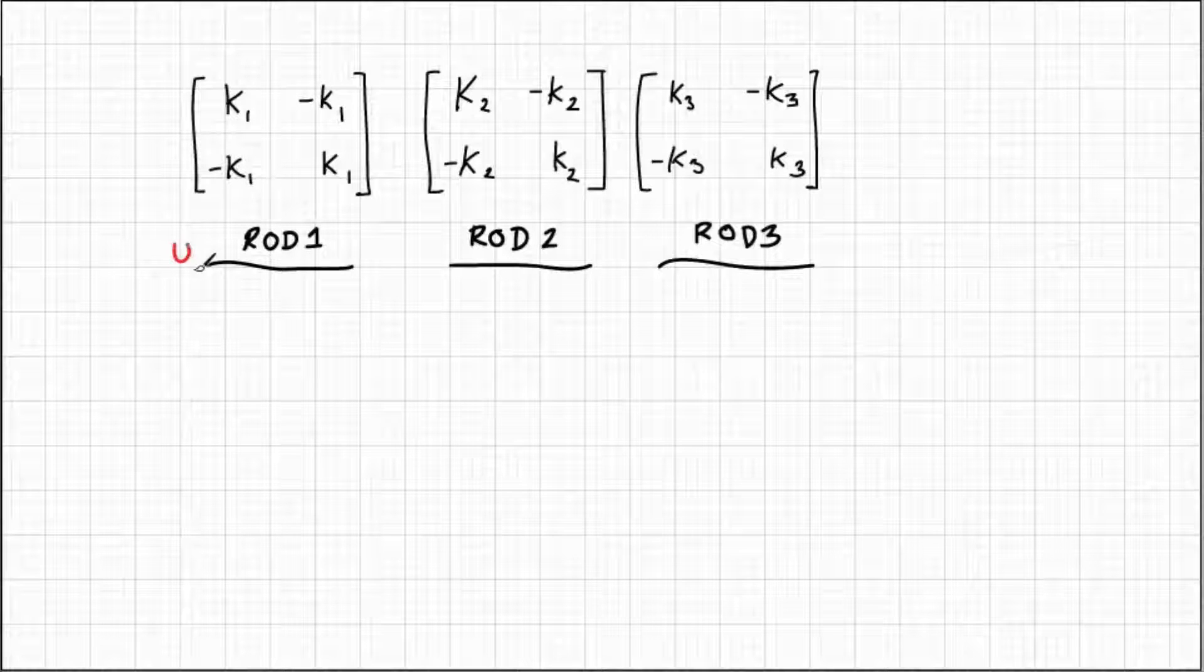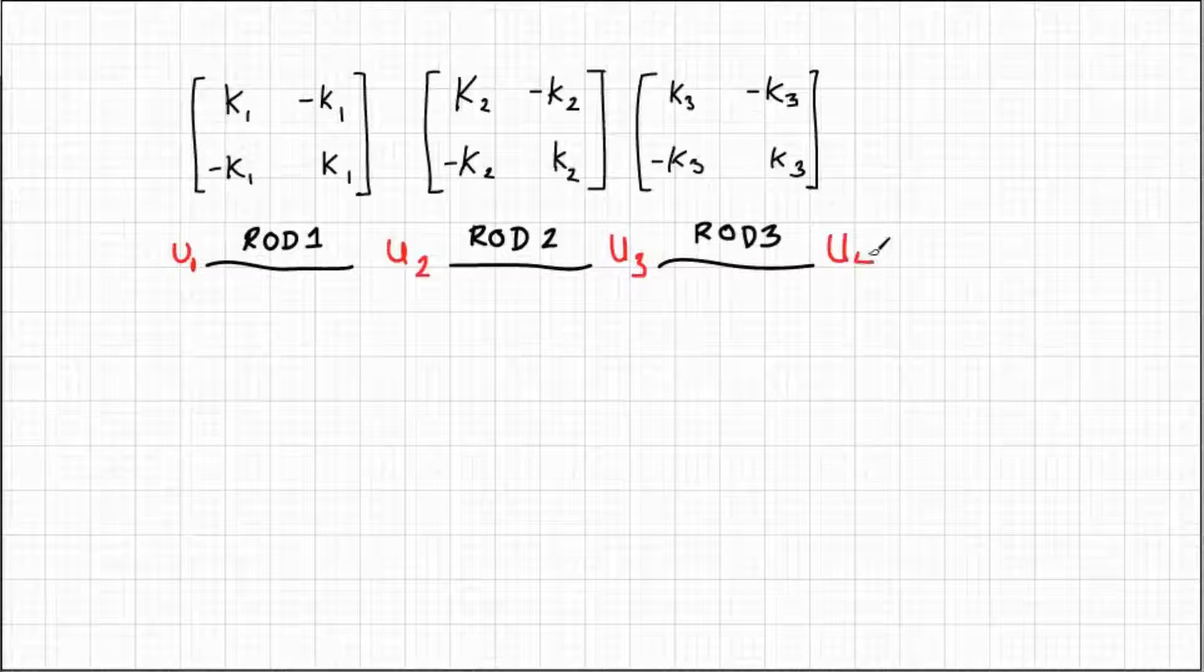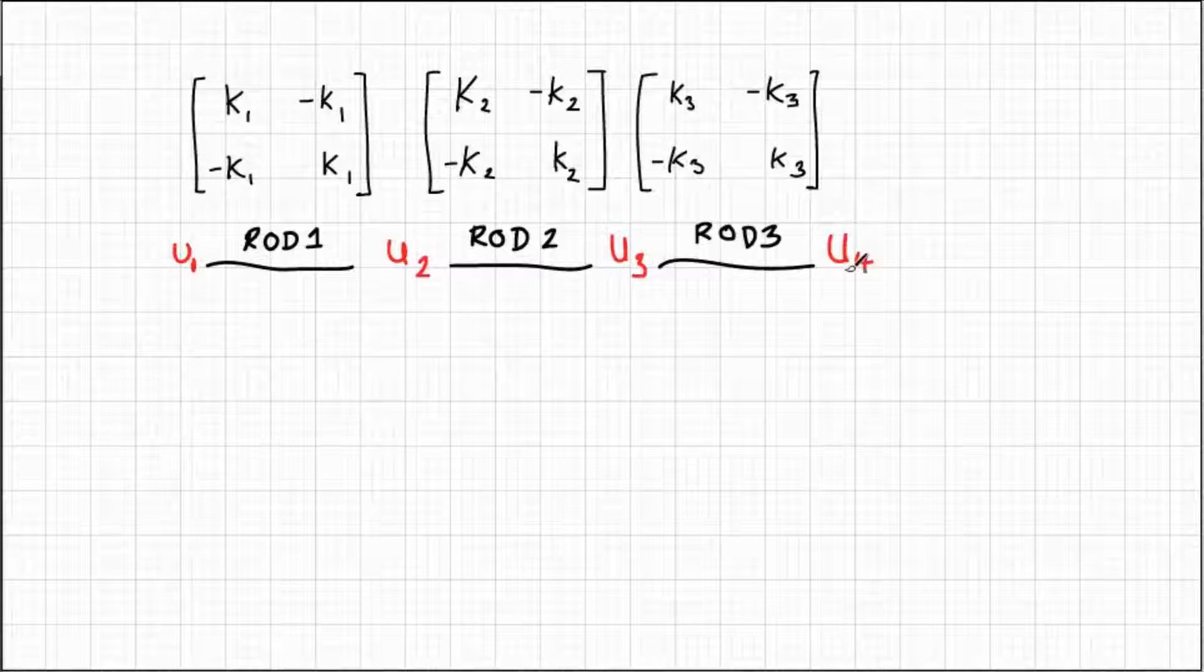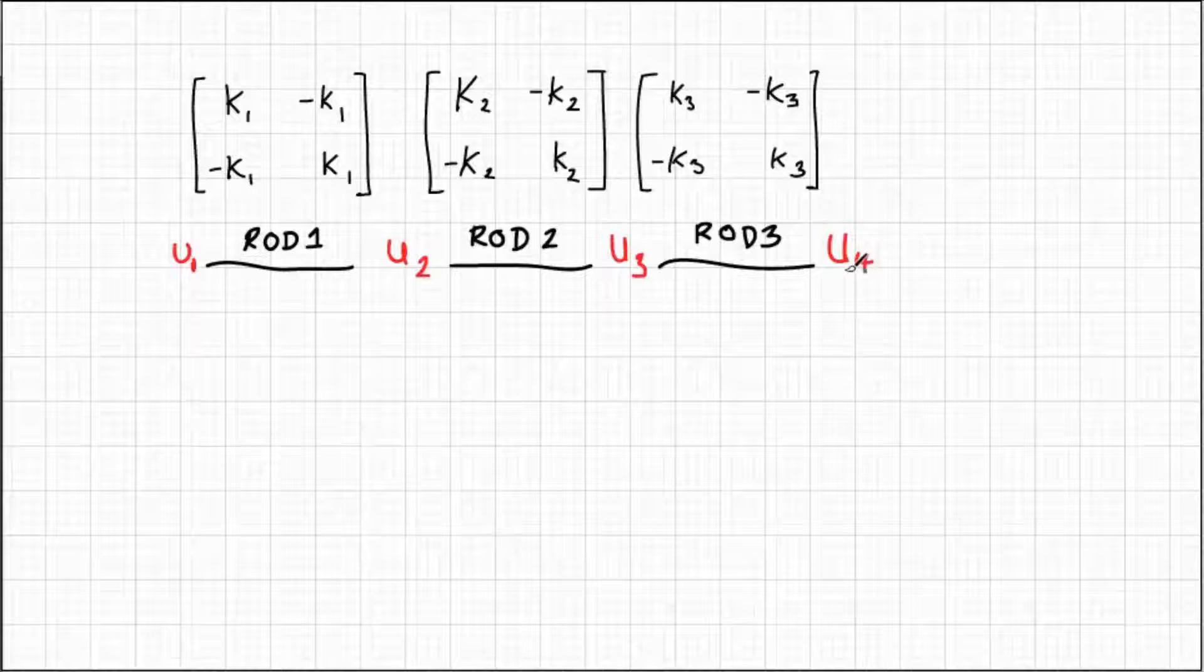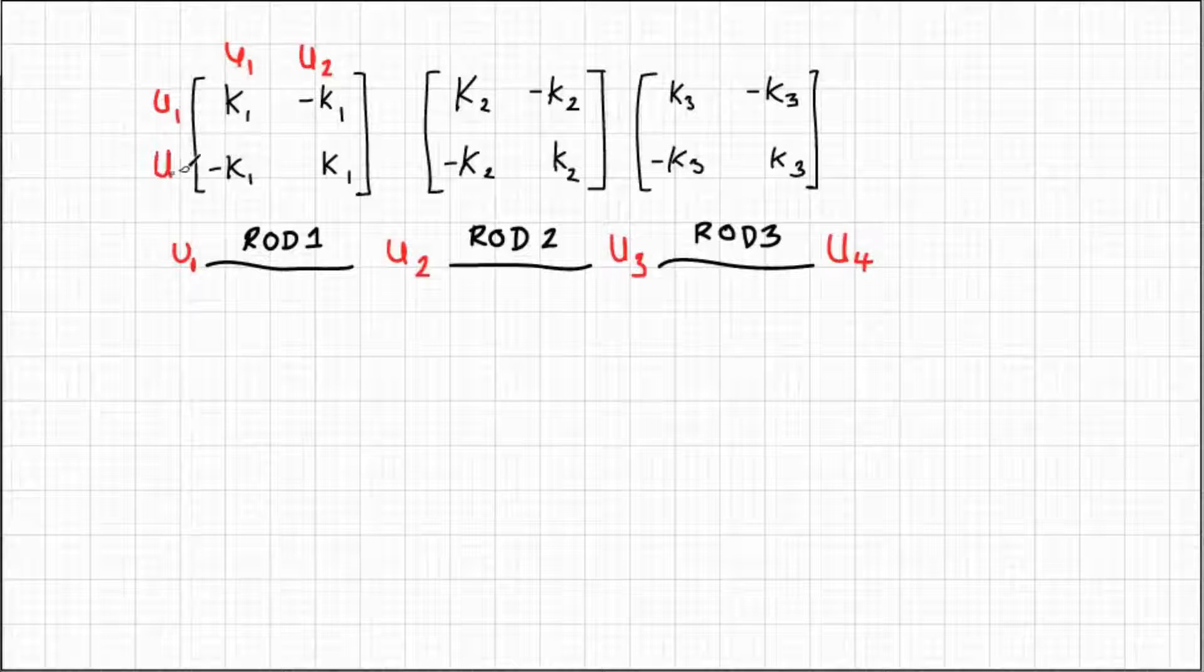Here are the three stiffness matrices, one for each rod. We're going to correlate the nodal degrees of freedom as we see physically along the rod to where they occur in each one of the stiffness matrices. So u1 through u4, the first stiffness matrix has u1 and u2, the second has u2 and u3.